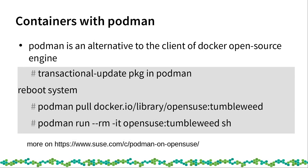Recently we've started to have Podman available, which is another way of running containers on Cubic. It's an alternative to the Docker client for the open source container engine. You can just install it with 'transactional-update package install podman', reboot your system, and then you can start pulling images from the Docker image hub and running containers with Podman. It's not out of the box like Docker, but it's very easy to start using on Cubic.